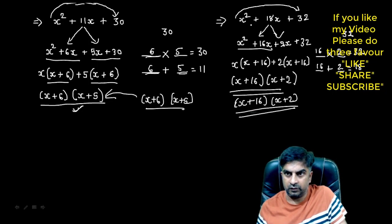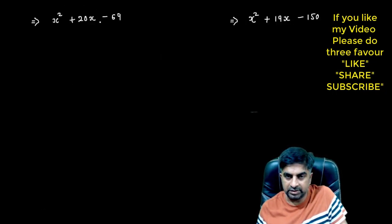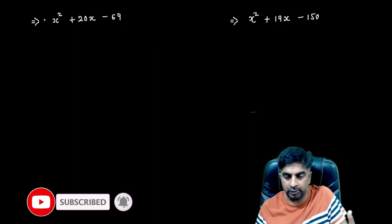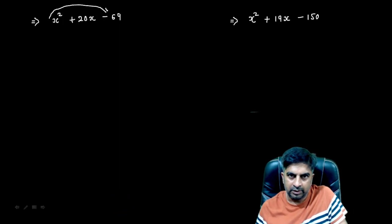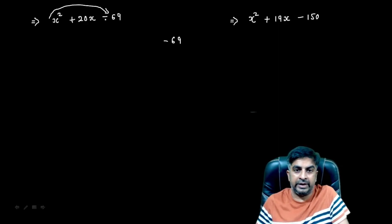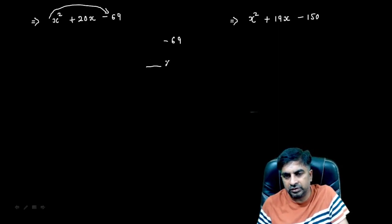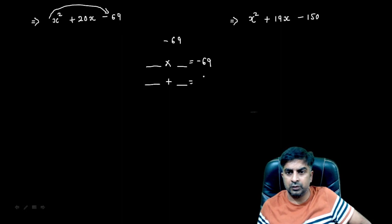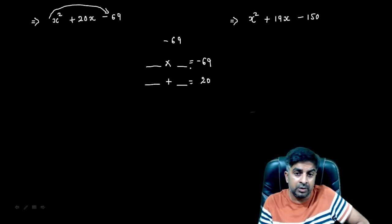Students generally get correct answers when positive signs are there, but they make mistakes when signs are negative. Look at this question where the sign is negative. To explain that, let me write down the steps. First, multiply the coefficient of x² and the last term: 1 × (−69) gives you −69 as the product.